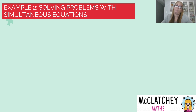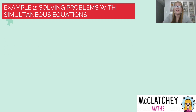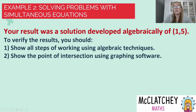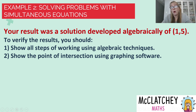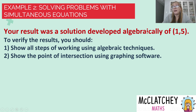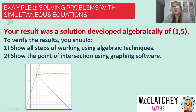My second example is solving problems with simultaneous equations — something you might typically see in a methods type assignment. They might be non-linear or linear equations. My result produced an algebraic solution of coordinates (1, 5). There are different ways I can verify this result. Firstly, I should have shown all my working to solve those simultaneous equations. I could also graph the two equations using software and show that this is my point of intersection. A third thing I could do is substitute the solution back into both equations and show algebraically that it works.